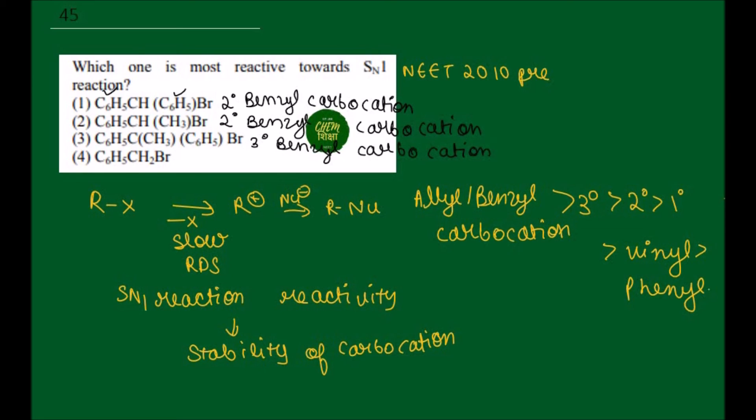The last one is C6H5-CH2-Br. This is our 1 degree benzyl carbocation. This is the least stable in comparison with the other three because we know that 1 degree is less stable than 2 or 3 degree.